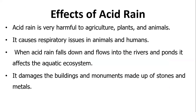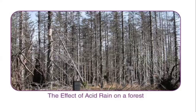The effects of acid rain: acid rain is very harmful to agriculture. It causes respiratory issues in animals and humans. When acid rain falls into rivers and ponds, it affects the aquatic system. It also damages buildings and monuments made of stone and metal. This is the effect of acid rain on forests.